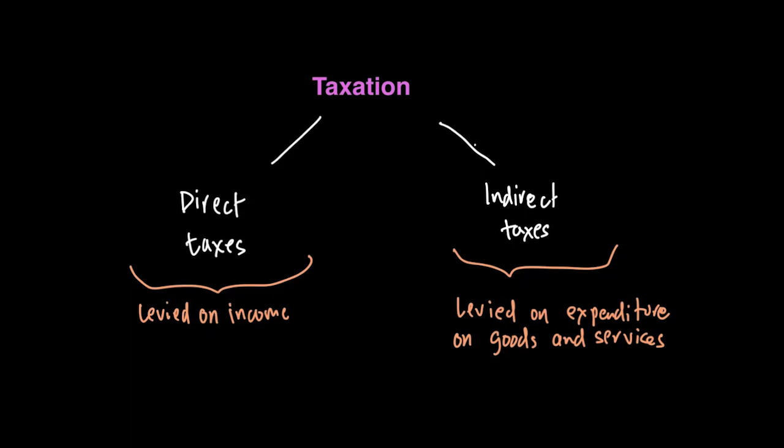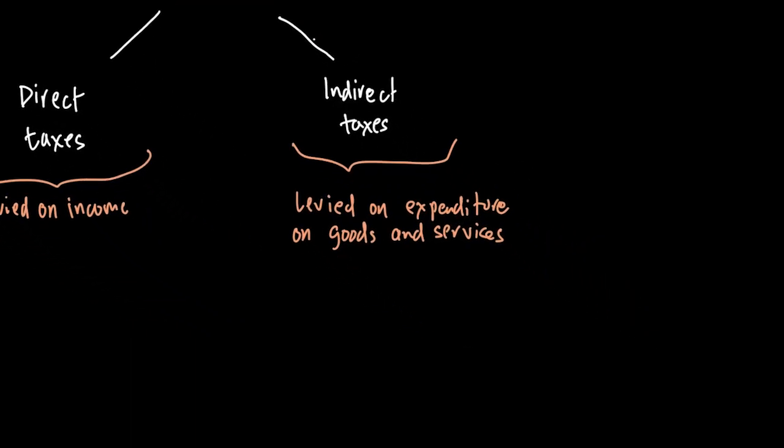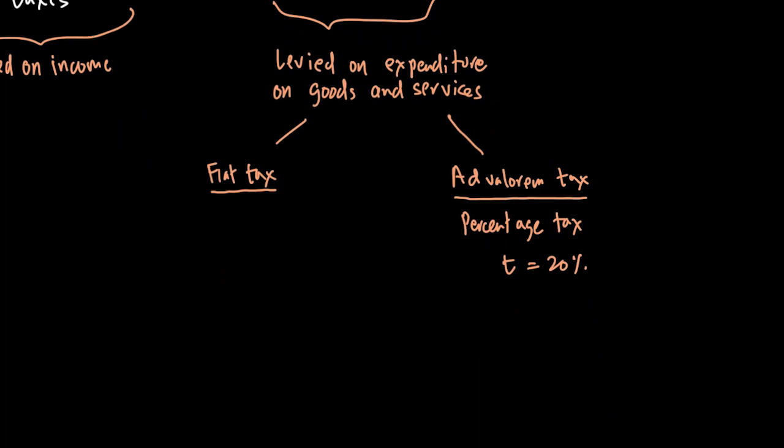Another important distinction is when we look at indirect taxes. Indirect taxes can be a flat or specific tax, which is a tax of an amount which doesn't vary with quantity, or it could be an ad valorem tax, which is placed as a percentage tax on a good or service. For example, VAT might be set at 20%. So ad valorem tax is simply a percentage tax while a flat tax would be an amount, let's say $5.